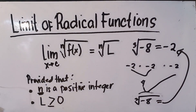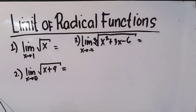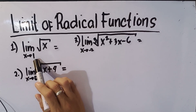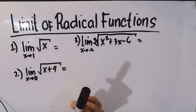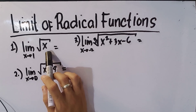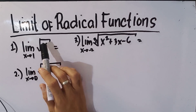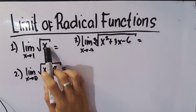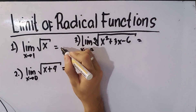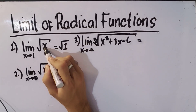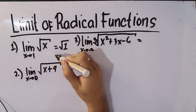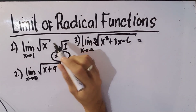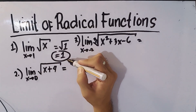Para mas madali, tatlong example tayo. Number 1: the limit of the square root of x as x approaches 1. I-evaluate lang natin yung limit na nasa loob nung radical sign — i-substitute lang natin yung x. This will become the square root of 1. The square root of 1 is, of course, 1. Therefore, the limit of square root of x as x approaches 1 is equal to 1.